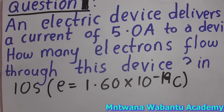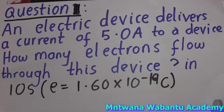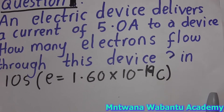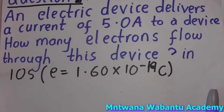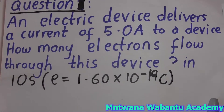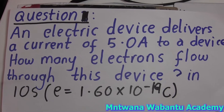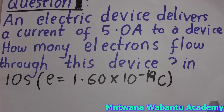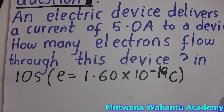So we have a question right here. Let's see — an electrical device. You have a certain device; it could be a phone, it could be a computer, or any electrical device which has a current of five amperes. Another device — how many electrons flow through this device? So how many electrons flow through the device?